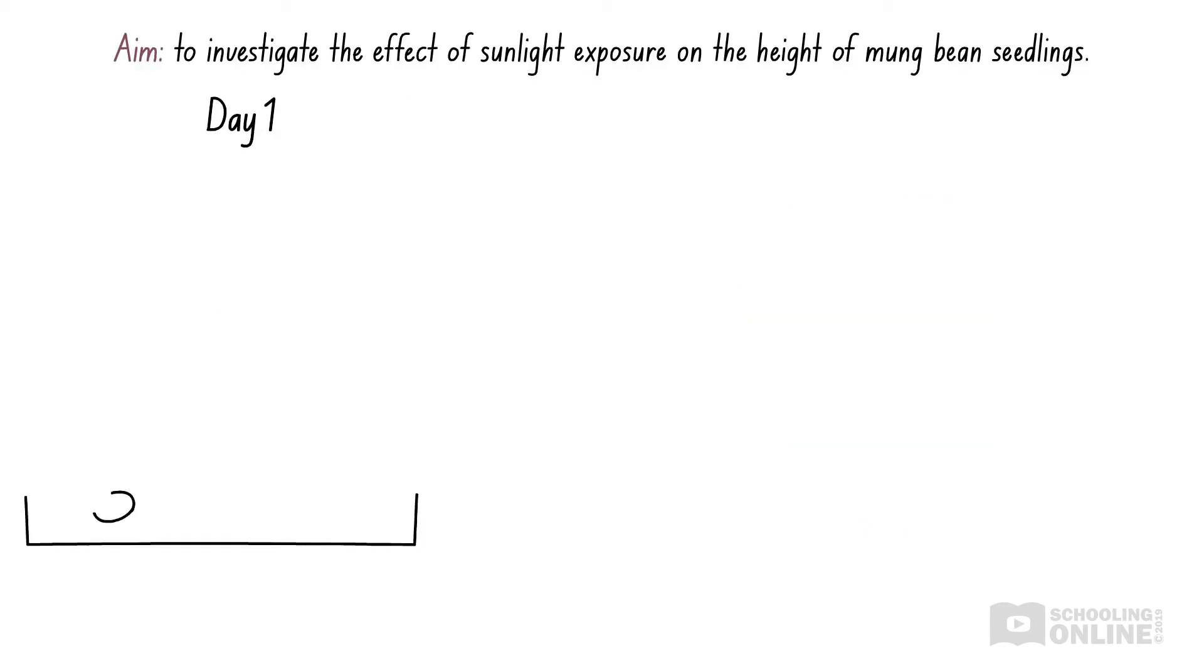Let's revisit the example from the previous video on reliability. The aim of this experiment is to investigate the change in height of mungbean seedlings when grown in sunlight. You grow three mungbean seedlings on a thick bed of wet cotton wool in a petri dish for a period of seven days. Then they are left in an outdoor area where they are not covered by shadows. All seedlings have initial heights of 10 millimetres.